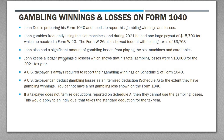John also keeps a ledger showing all of his winnings and losses, and he has losses of $18,600 for the year. Overall he's in the hole — he had a big payout but lost a significant amount exceeding that. US taxpayers report gross gambling winnings on Schedule 1 of Form 1040, and if you itemize, you can deduct gambling losses on Schedule A, but those losses can never exceed the gross winnings reported.